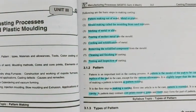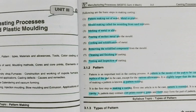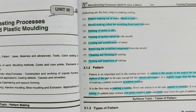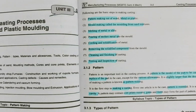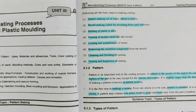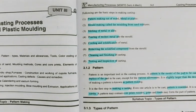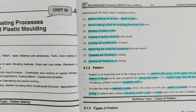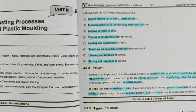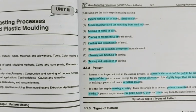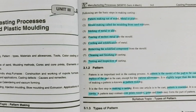First step is pattern. Pattern is the model of the part to be cast, or replica or duplicate of the part to be cast. It is considered as the replica of the part to be cast, except for the various allowances. It is slightly larger than the desired casting. The process of making a pattern is called pattern making.